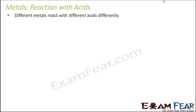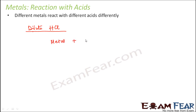Let us take examples of a few acids for better understanding. Let us take a dilute acid, say dilute HCl — dilute hydrochloric acid. Now normally, if a metal reacts with a dilute acid, it generally forms a salt and releases hydrogen gas. So that is the general trend.